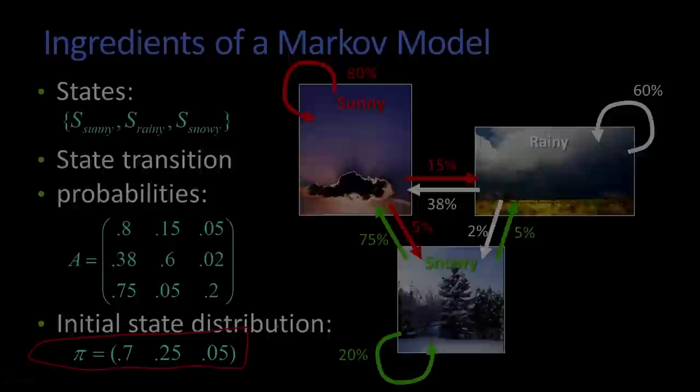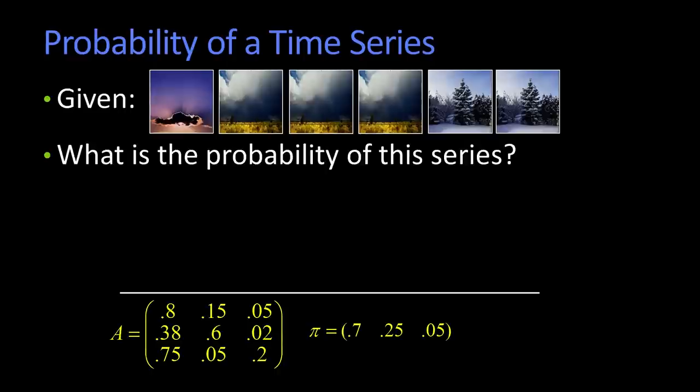So given this Markovian model, you can ask certain questions. For example, you could say, if I give you this series, so that's sunny, rainy, rainy, rainy, snowy, snowy.